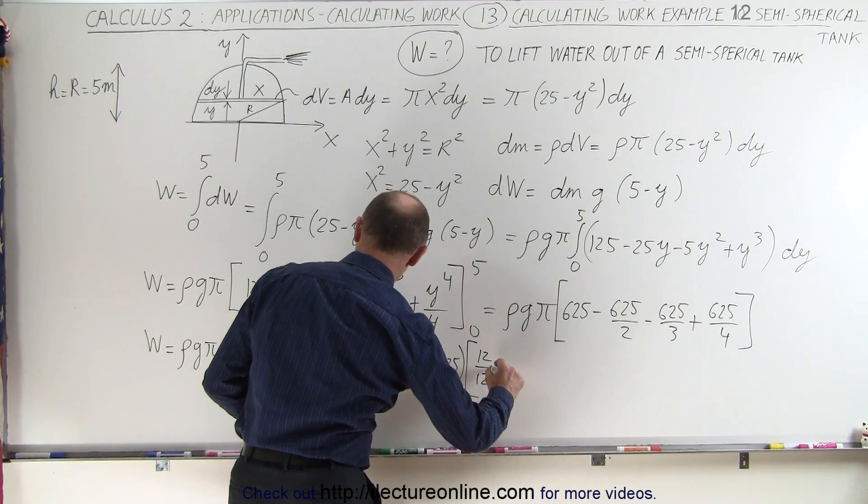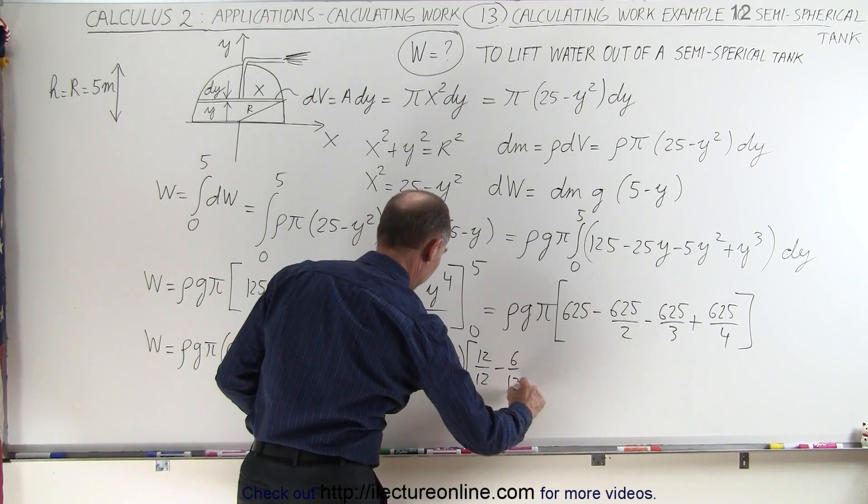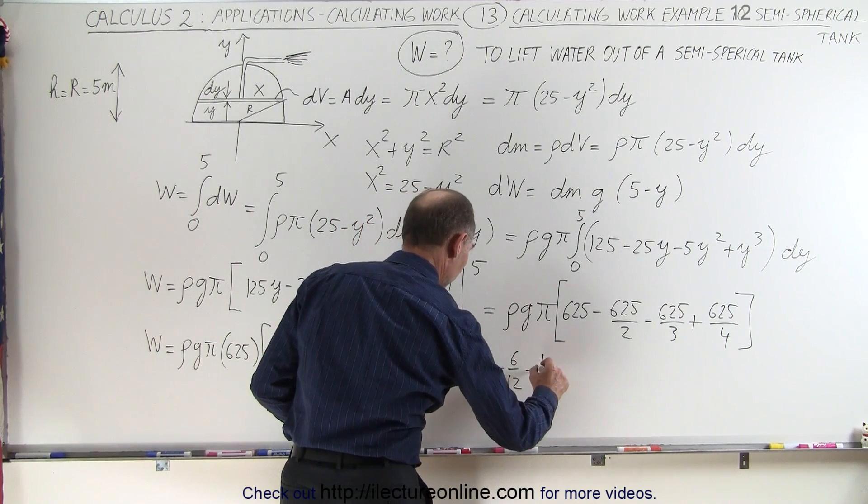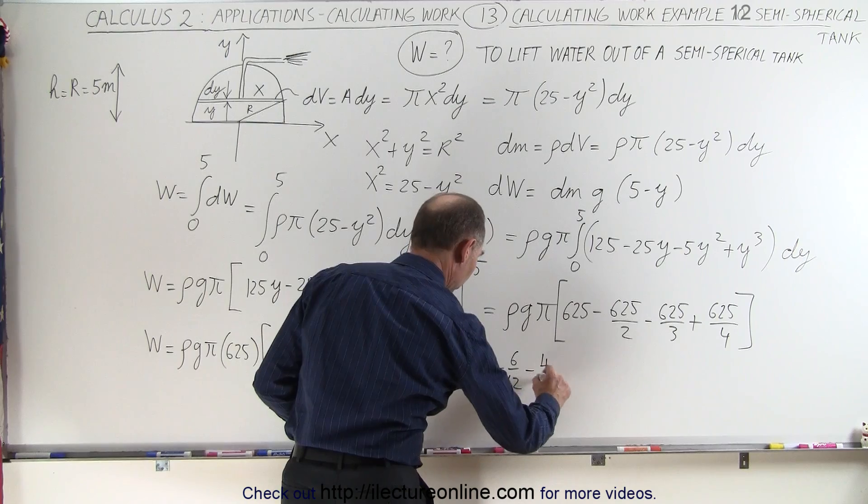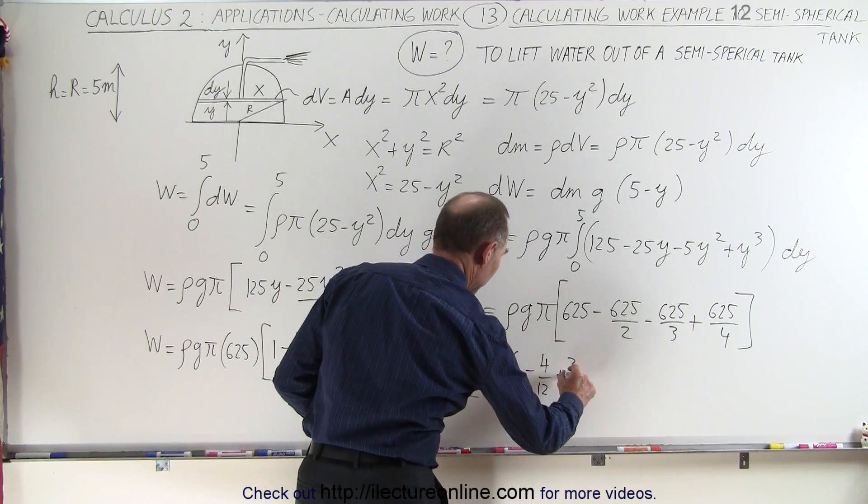This would be 12 twelfths minus 6 twelfths minus, let's see, that would be 4 twelfths and plus 3 twelfths.